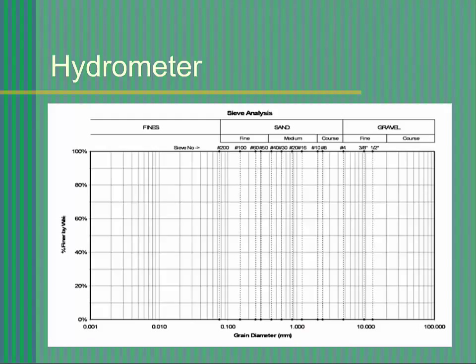Hydrometer Testing, an Overview. There are two ways to determine the grain size distribution of a soil. The first is a sieve analysis, and the second is a hydrometer test.